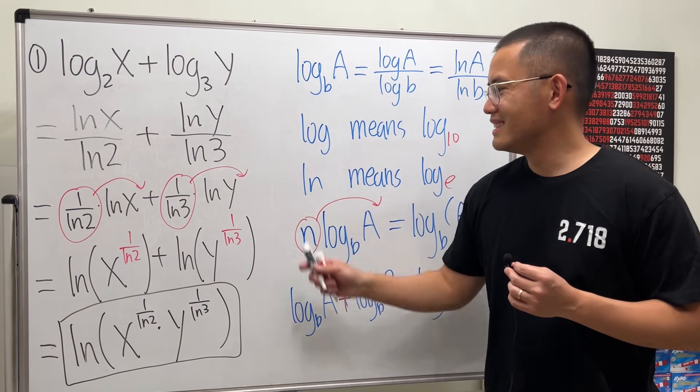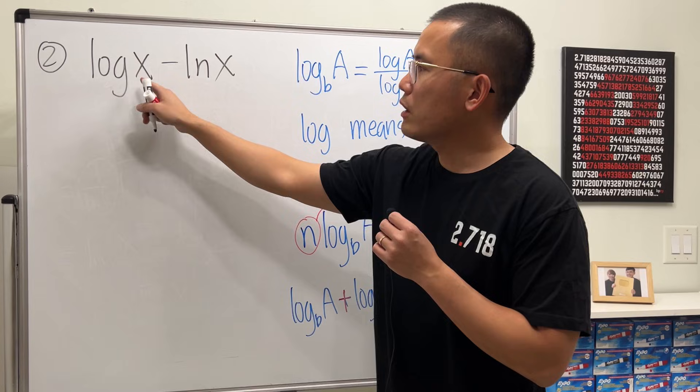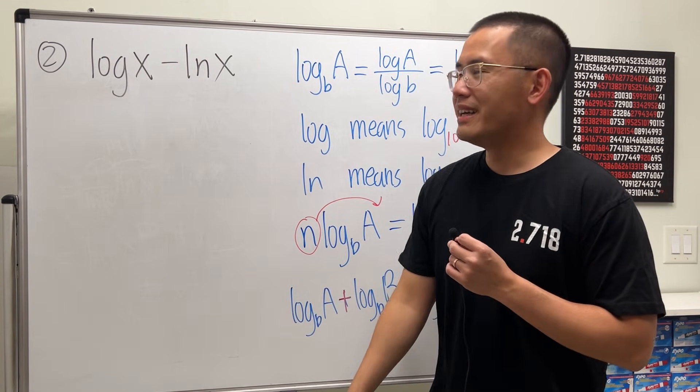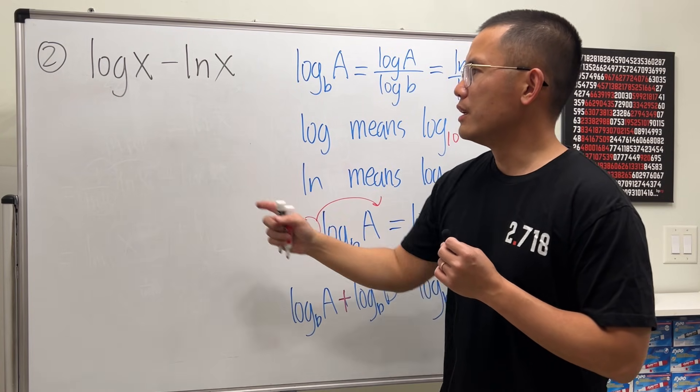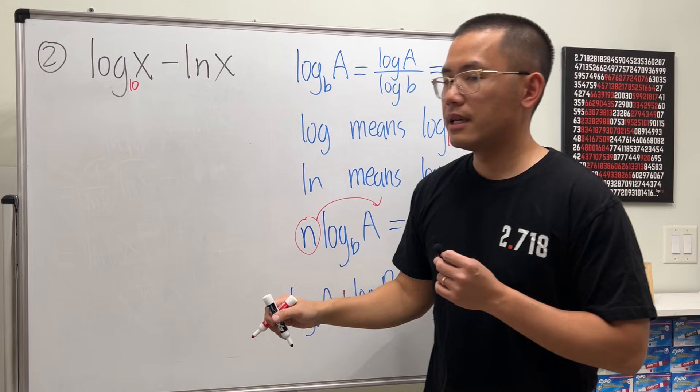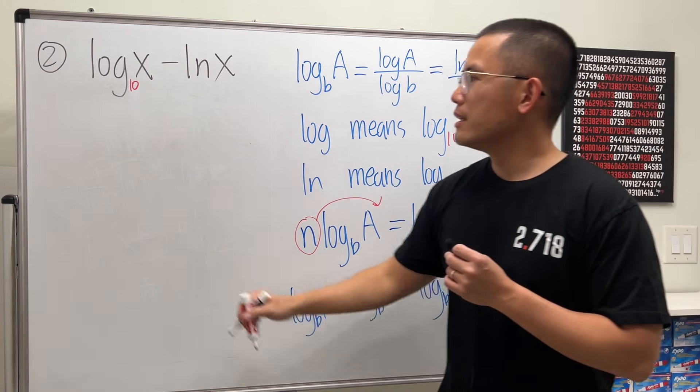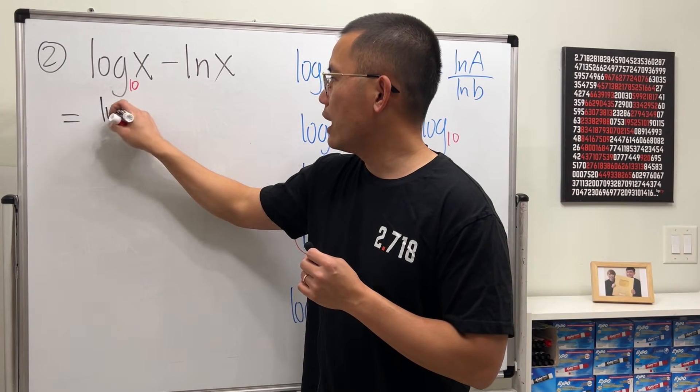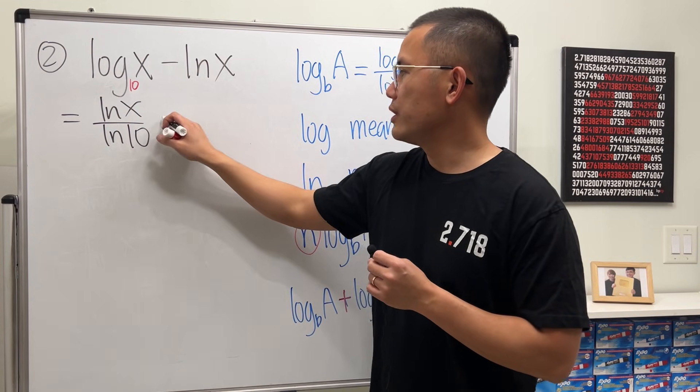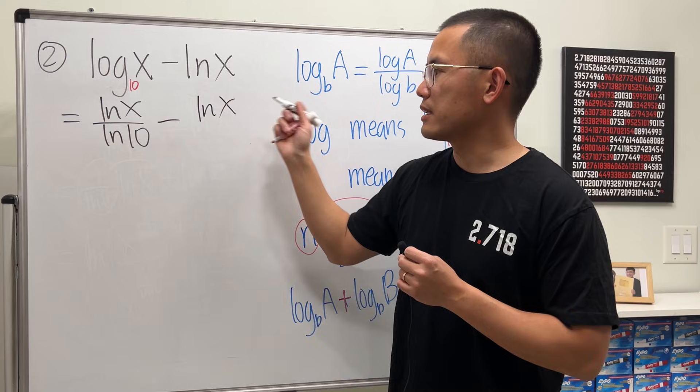Let's do another one. Now for this one, we have log of x minus ln of x. This time we have x inside and x inside. And since the second one is ln already, why don't we change the first log, which is log with base 10, into a natural log? So this becomes ln of x over ln 10, and then continue with minus ln x.